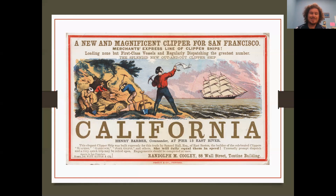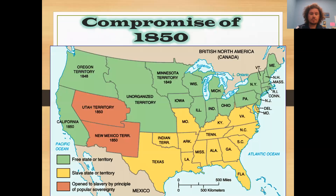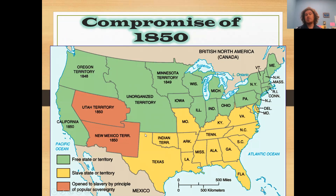Gold is discovered in California, and tens of thousands of Americans suddenly want to move there to try to strike it rich — this is in 1848, 1849. Those of you who are football fans know the San Francisco 49ers; that's where they get their name from, the settlers that moved to California to mine for gold. Because of all those people moving out west, California suddenly has a huge population and they apply for statehood. The question of what to do with California — is it going to be a slave or a free state? It's called the Compromise of 1850.